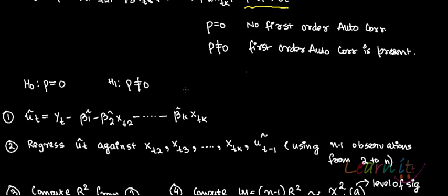û_t is yt minus β1-hat minus β2-hat xt2 and so on to β-hat_k xtk. So you will get û_t. Now you will regress û_t against all of the variables which were originally in the model along with û_{t-1}. You are using n minus 1 observations because you are using t minus 1 here.